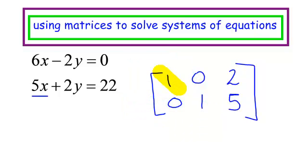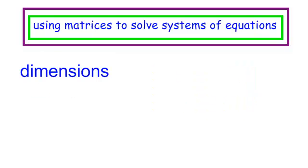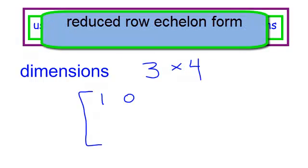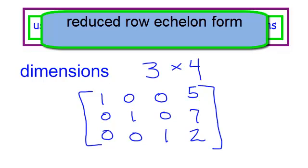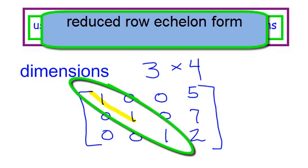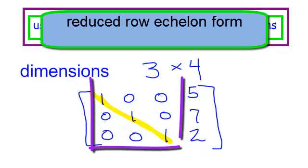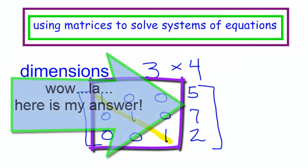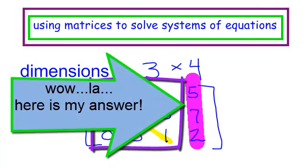Notice how the 1's come down in the diagonal. If I had a larger matrix — say dimensions of 3 by 4, that's 3 rows by 4 columns — for it to be in reduced row echelon form, it would look something like this. My answers would be here. Let's pretend they are 5, 7, and 2. Notice how the 1's go down the diagonal, and since it is in reduced row echelon form, I have 0's below and above, and the answer would be 5, 7, and 2.